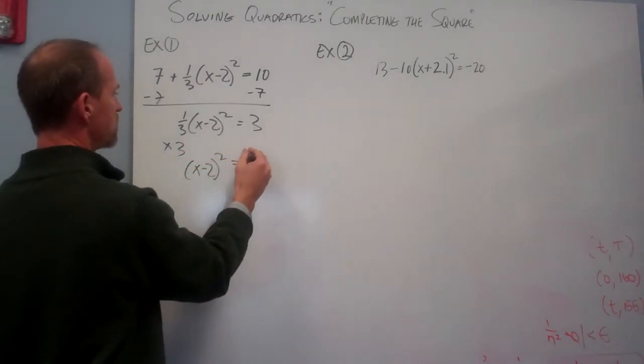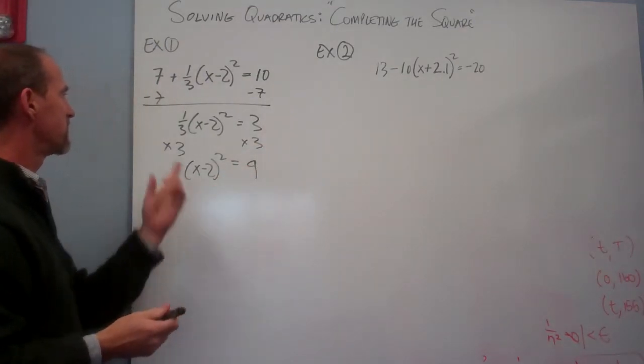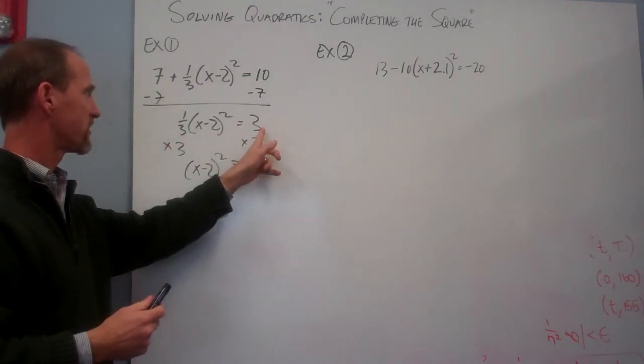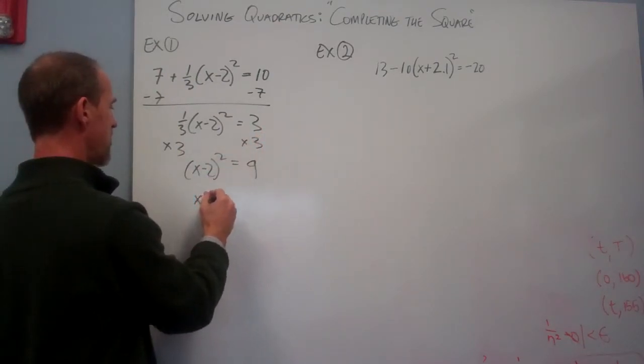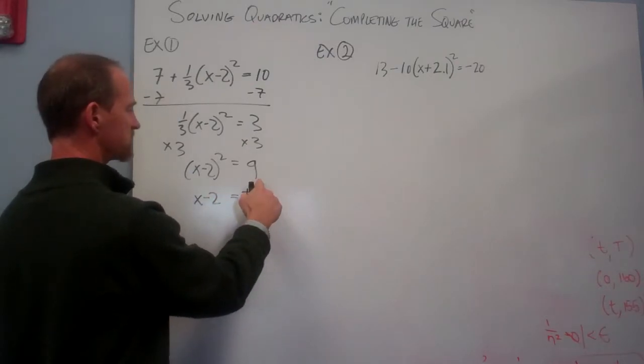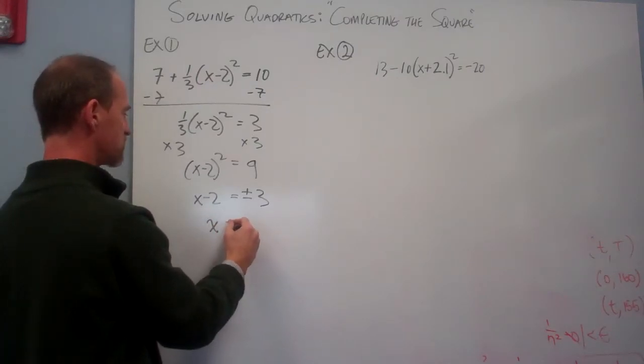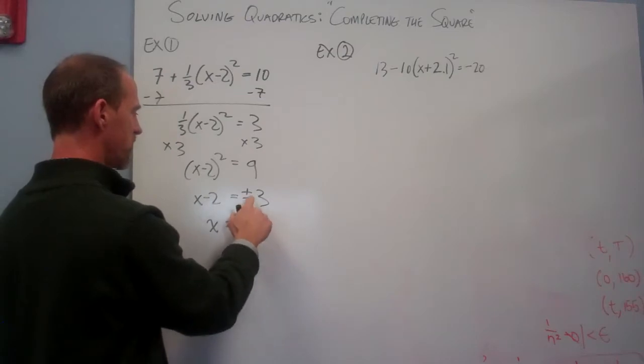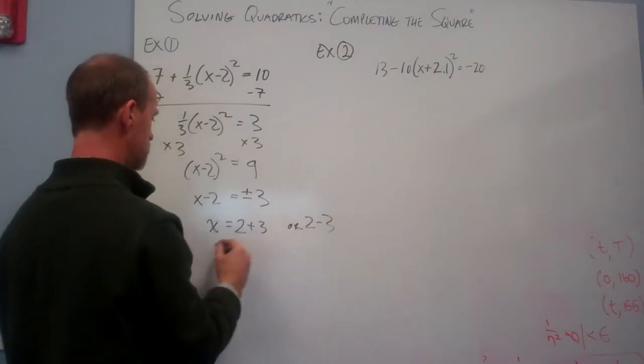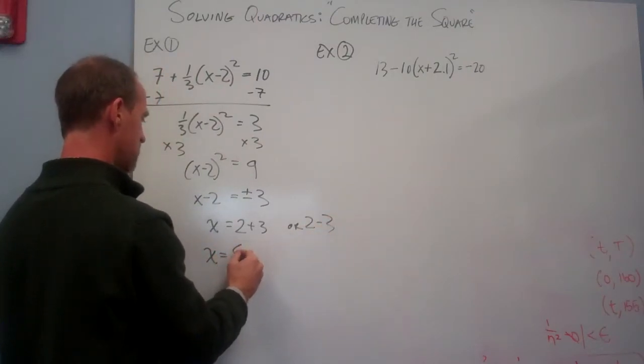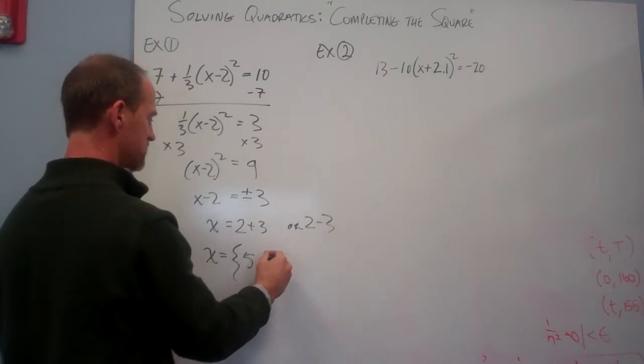And that just cancels. And I get x minus 2 squared equals, well if I multiply this side by 3, I get 9. Just make sure you don't make the mistake of dividing by 1 third and somehow thinking that this is 1. But it's not, it's 9. Now I can take the square root of both sides and I get x minus 2 is equal to plus or minus the square root of 9 is 3. And then finally I write my solution as x is equal to add 2 to both sides, 2 and then plus 3 or 2 minus 3.